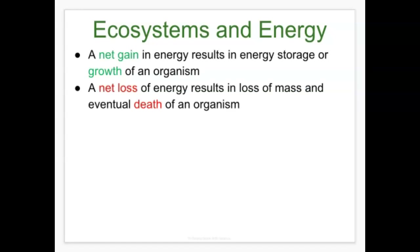When we talk about ecosystems and energy, we look at a net gain or net loss of energy, because that net gain or loss will lead to — or not lead to — an increase in mass, which could ultimately cause growth in the organism. A net gain of energy results in energy storage or growth, while a net loss of energy results in loss of mass and eventually death of an organism.